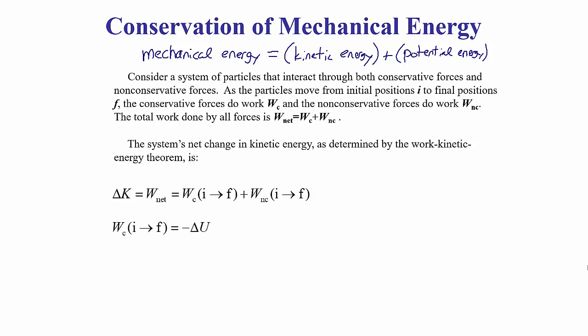In the last video, we related potential energy with conservative forces, and said that the change in potential energy of an object equals the opposite of the work done by the associated conservative force. For example, the change in gravitational potential energy is the opposite of the work done by the gravitational force. So the work done by conservative forces equals the opposite of the change in potential energy, which we can substitute in.